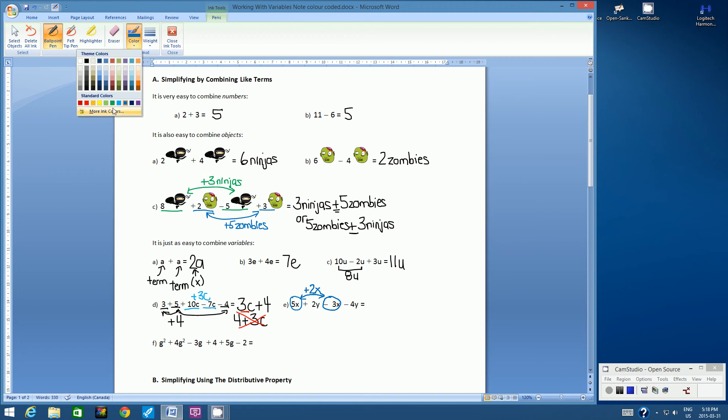Now, if I were to use a different color. Now, let's look at the y's. I have positive 2y subtract 4y. So what is positive 2y subtract 4y? Well, that's negative 2y.